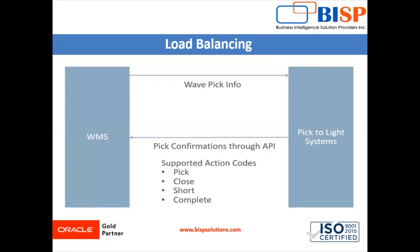You can see in the flow diagram the wave pick information being sent to the pick-to-light system. The pick-to-light system receives the wave pick information message and will perform the pick and packing operations. When the pick operations are performed, the pick-to-light system will make an API call and send the pick confirmation through the API. At the last, WMS uploads the pick and pack information on our system.